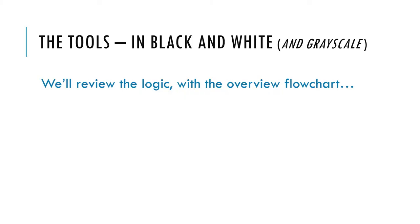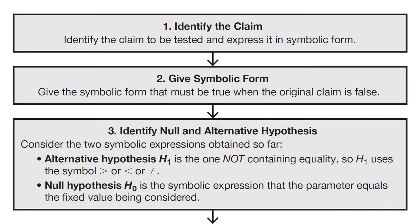What I meant when I said I want to put it all in black and white is that I'm going to try to make it clear. I've taken the flowchart in grayscale and we're going to look at one segment of the flowchart at a time, give an explanation of what's going on, and then apply all this to a specific example.